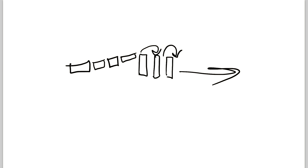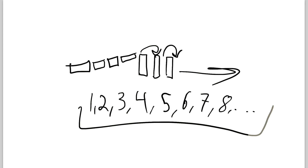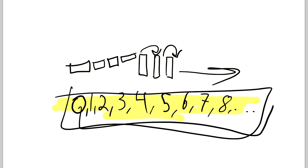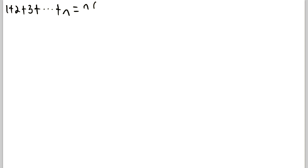That's how a proof by induction works, except instead of dominoes it's a proposition about an infinite set of numbers — in particular, usually a proposition about the natural numbers: 1, 2, 3, 4, 5, 6, 7, 8 and so on. So the proposition we're going to prove by induction is that the sum of the first n natural numbers is equal to n multiplied by n plus 1 divided by 2. So if you add 1 + 2 + 3 all the way up to n, you get n times n+1 over 2.